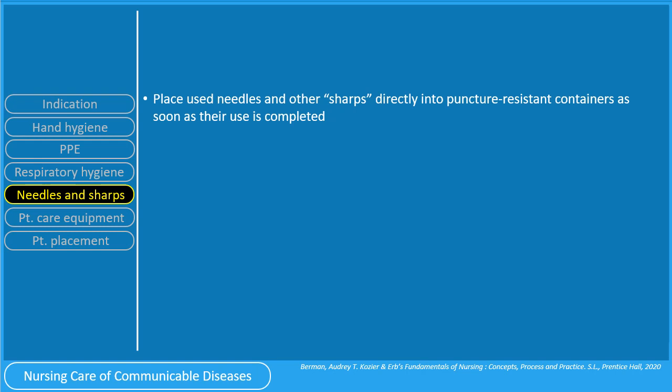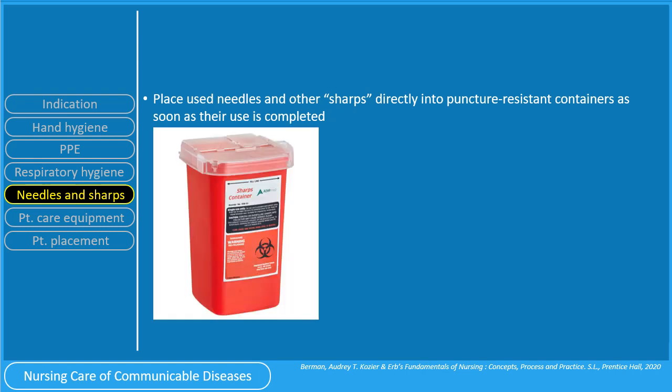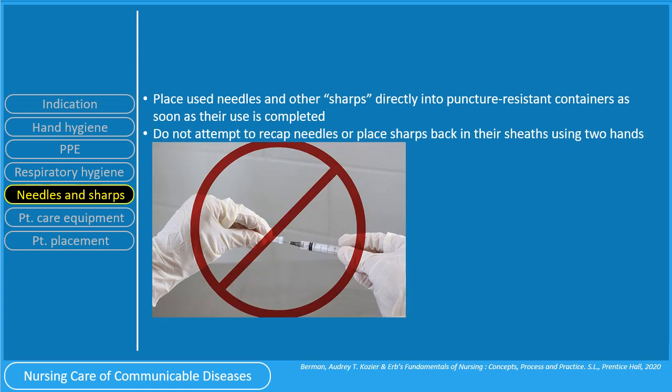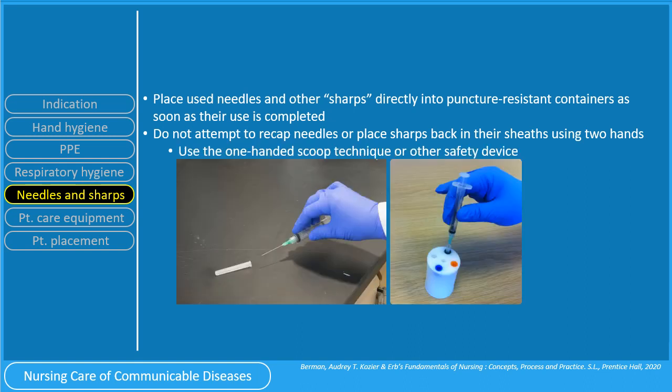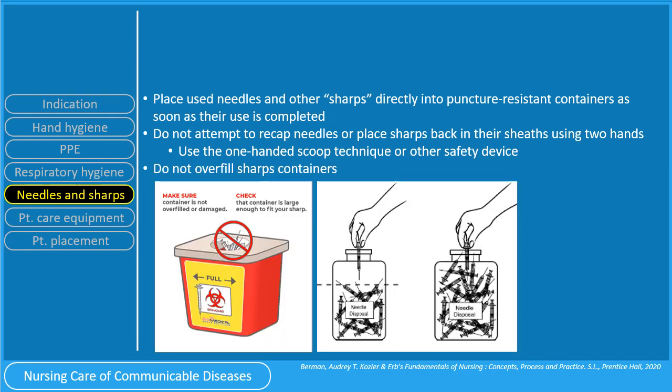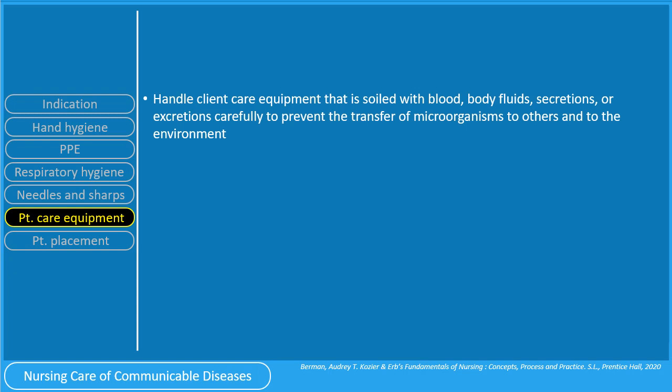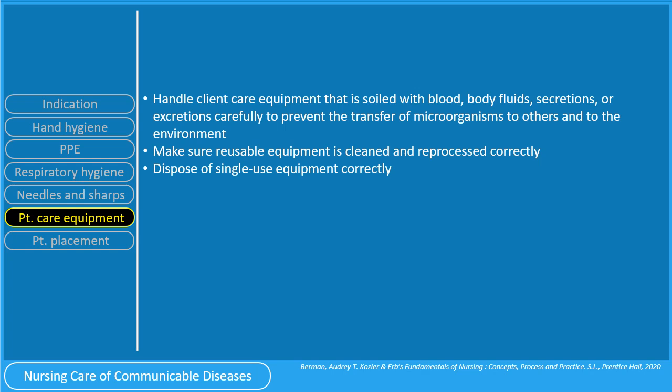Place needles and other sharps directly into puncture-resistant containers as soon as their use is completed. Remember that sharps containers are color-coded red. Do not attempt to recap needles or place sharps back in their sheaths using two hands, as this can result in a needle stick injury. Use the one-hand scoop technique or other safety device. Do not overfill sharps containers. Handle client care equipment soiled with blood, body fluids, secretions, or excretions carefully to prevent transfer of microorganisms. Make sure reusable equipment is cleaned and reprocessed correctly, and dispose of single-use equipment correctly.